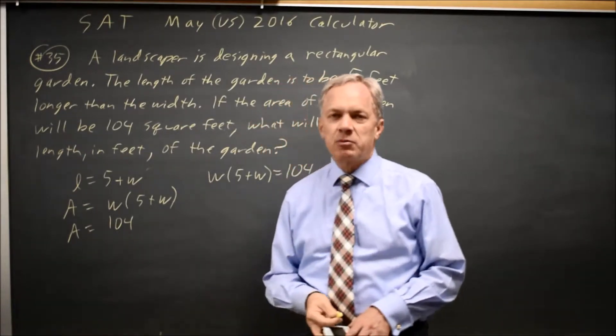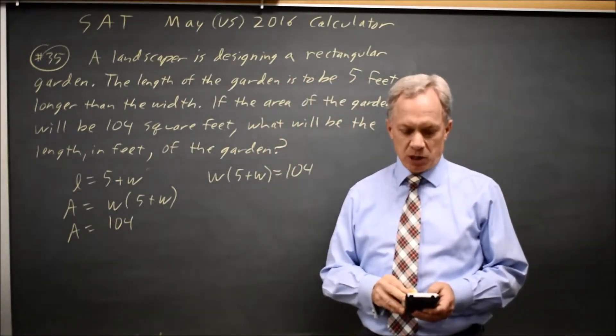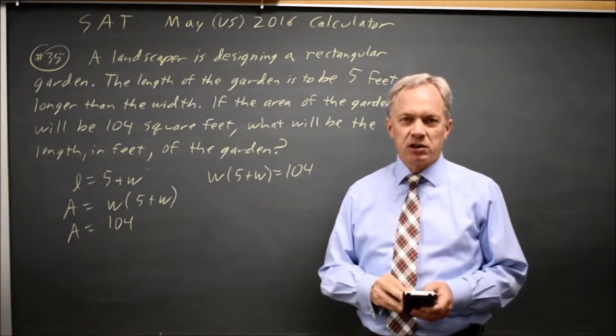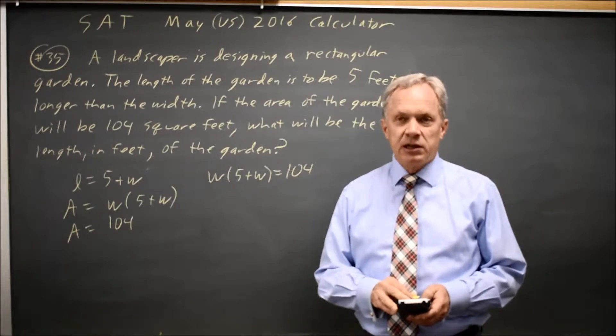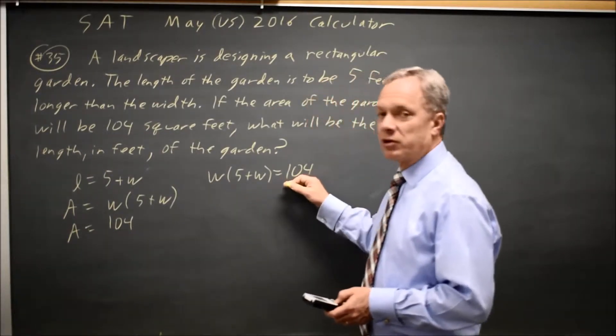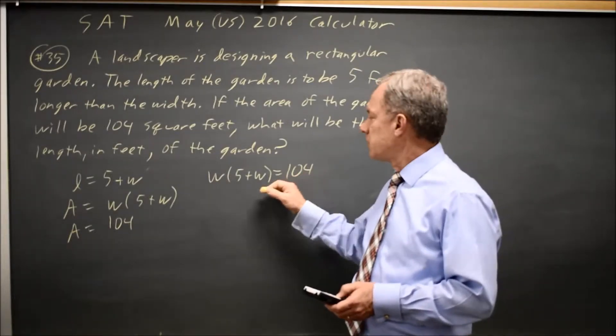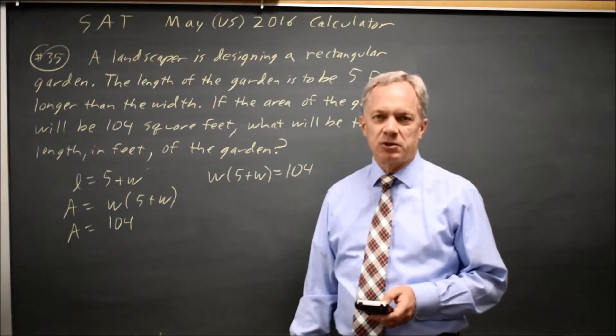I can solve this by hand, but this is a calculator question, so I'm going to put the left side of my equation in Y1 on my graphing calculator, the right side in Y2, and graph them in a window where I can see a Y value of 104, so how about Y max equals 200, and where I can see any reasonable value of W. How about X max equals 20?